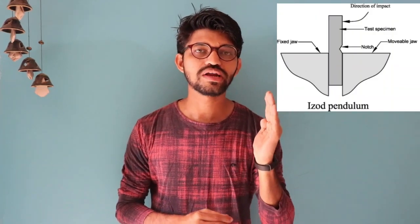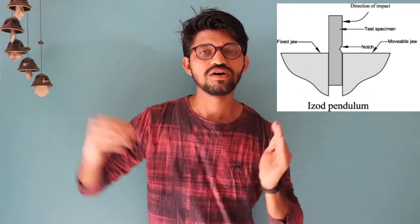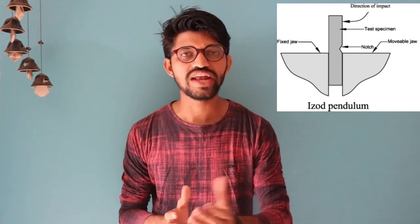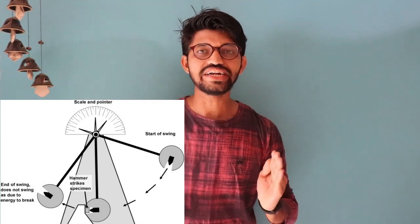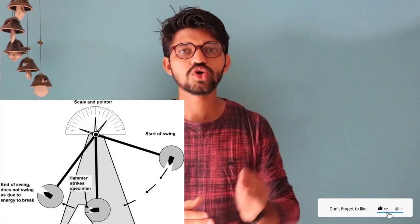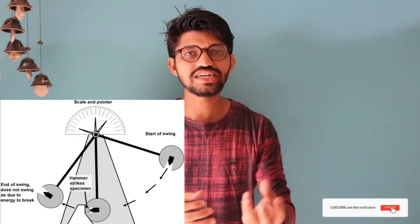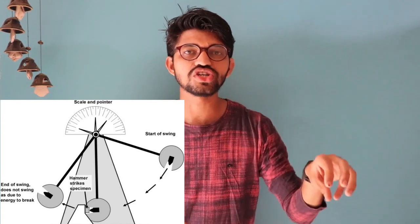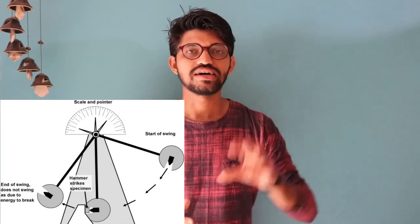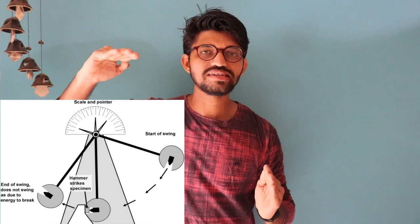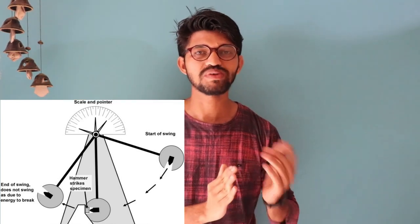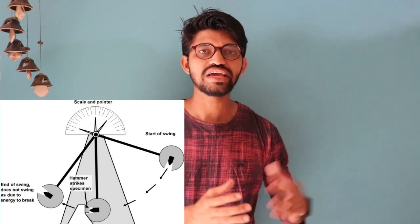The specimen is held vertically such that the V-notch is facing towards the hammer. It is held on the anvil and then the hammer is released so that it strikes the specimen at an angle of 90 degrees. Before striking, the initial potential energy in the hammer is noted down from the scale connected to the hammer. The hammer is then released, strikes the specimen, and the specimen gets deformed.